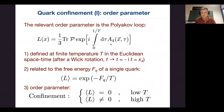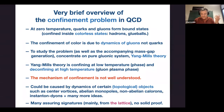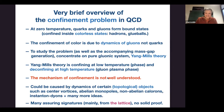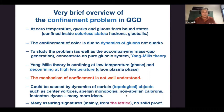We work only with the gluonic part of the Lagrangian and introduce static probe quarks to study their free energy using the Polyakov loop operator. The mechanism of confinement is not understood — there are many models: center vortices, Abelian monopoles, Abelian colorons, instanton-dyons, various semi-classical configurations in the vacuum. Each of those models has some deficiency. We would like to know the real truth — how confinement is actually created in this world.